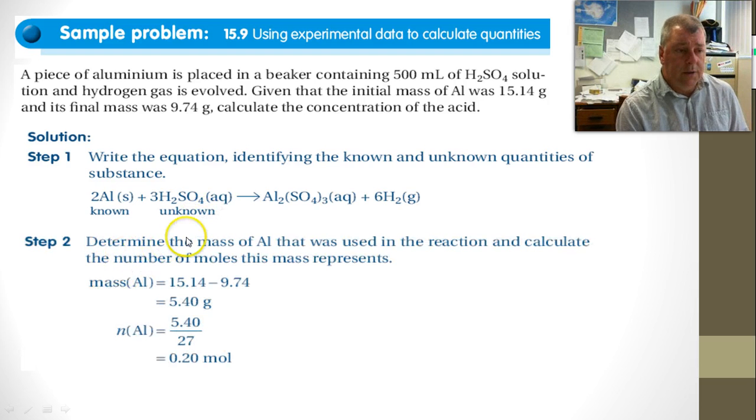Now determine the mass of aluminum that was represented in the reaction. Now you're given two masses. This is the before mass, this is the after mass, so we need to subtract them. And the actual amount of mass undergoing this reaction, getting dissolved, is 5.4 grams, and we convert that into moles by dividing by the atomic mass of aluminum, and we get 0.2 moles. That's step two.